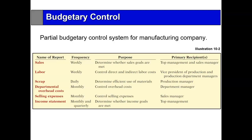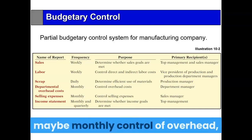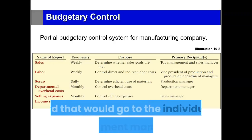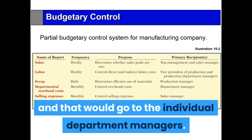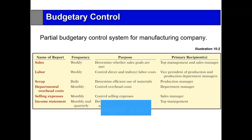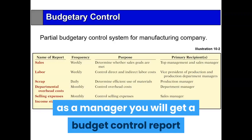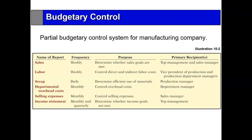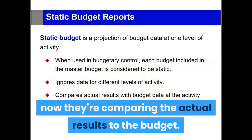We would also have departmental overhead costs — maybe monthly control of overhead — and that would go to the individual department managers. As a manager, you will get a budget control report for the area that you are responsible for. They are comparing the actual results to the budget.